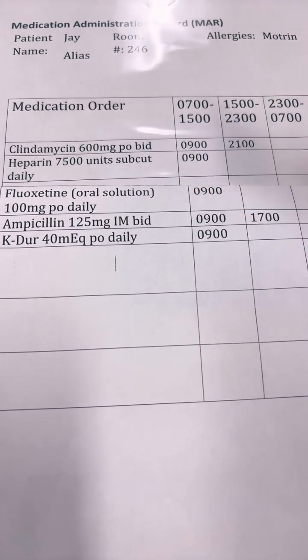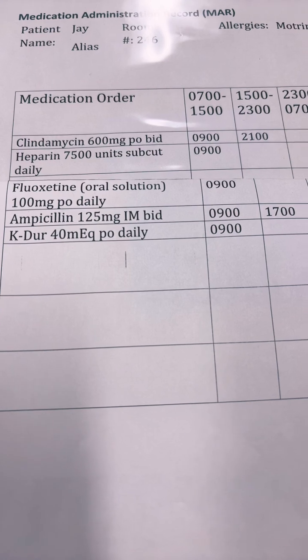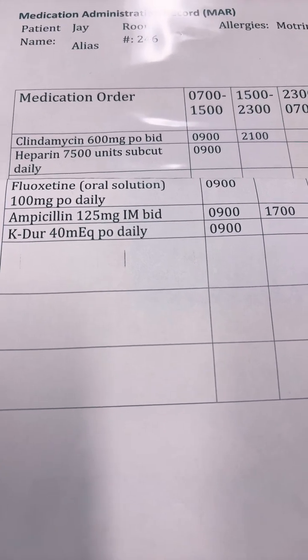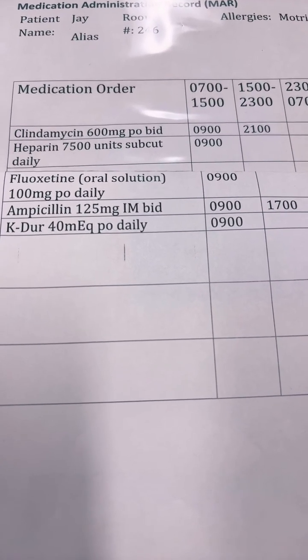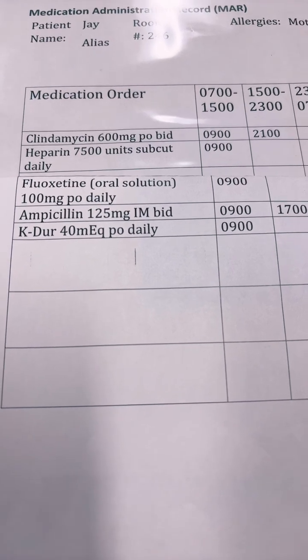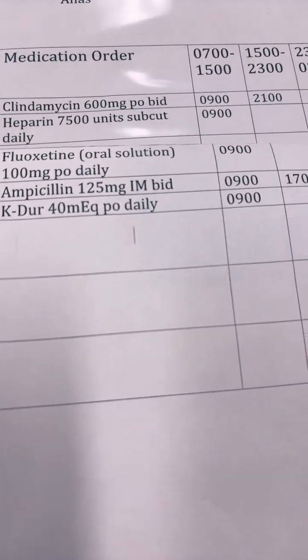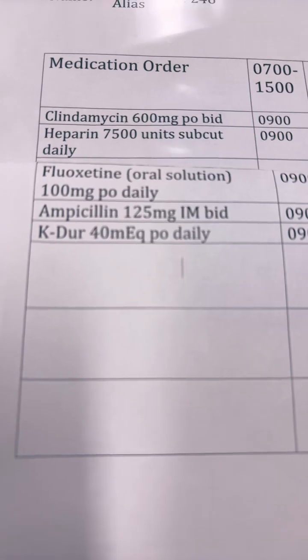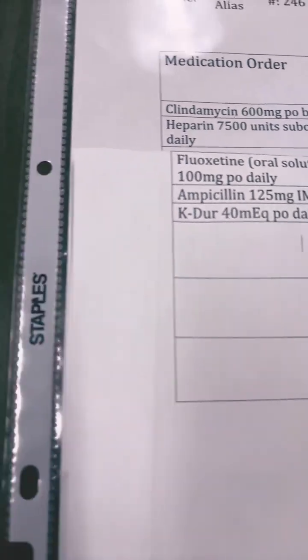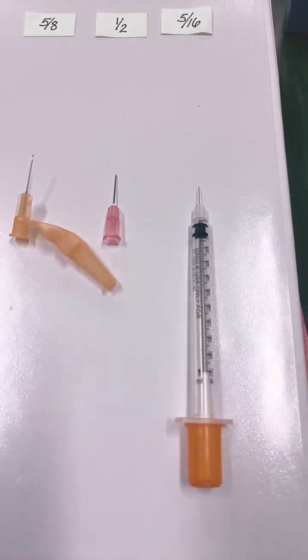You'll see that the doctor does not order you to select a three milliliter syringe with a one and a half inch needle, 25 gauge. That's all nursing judgment and that judgment is based on the route ordered and the size of our patient. So let's look at some correct needle sizes.